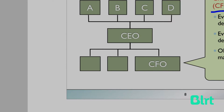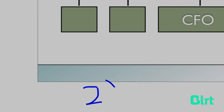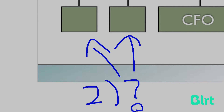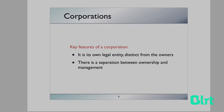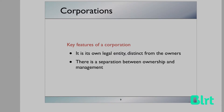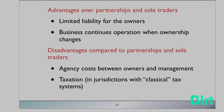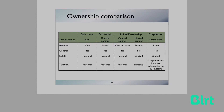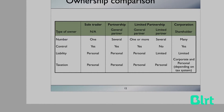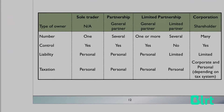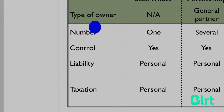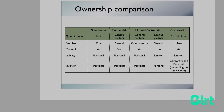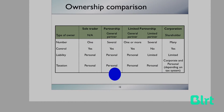We've left some positions out and one of the tasks is to think about what some of those positions might be — next to the CFO and underneath the CEO. I'd also like you to go through the features of a corporation, agency costs, and the advantages and disadvantages of corporations in your own time. There's also an important diagram showing the differences between all types of ownership — sole trader, partnership, limited partnership, and corporation — distinguishing them by type of owner, number of owners, level of control, liability, and taxation. A lot of multiple choice questions for the final exam come from this table, so it's really important that you understand it.